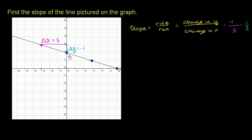I want to show you that we can do this with any two points on the line — we could even go further than 3 in the x direction. Let's go the other way: start at this point and move backwards to this point over here. To go from this point to that point, our change in x is that distance. We started at 3 and went to negative 3, so our change in x is equal to negative 6.